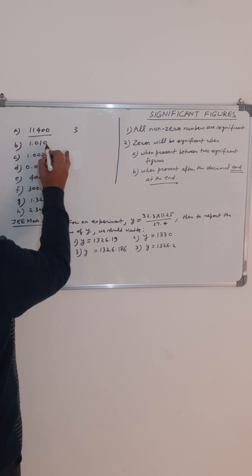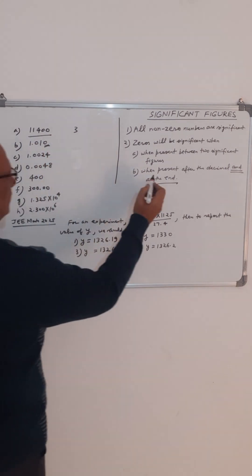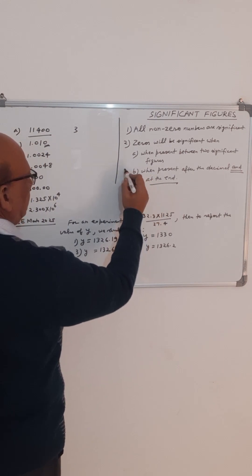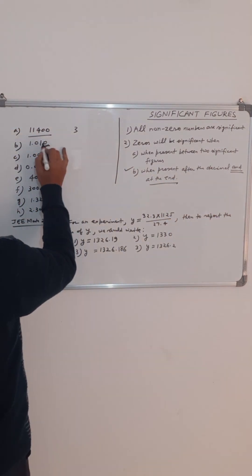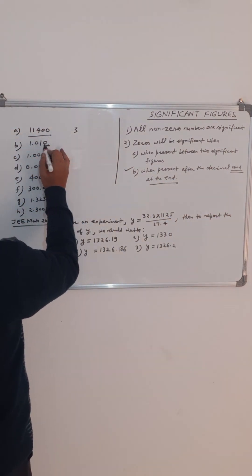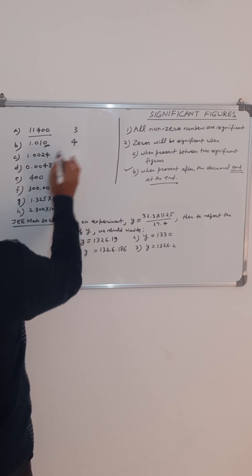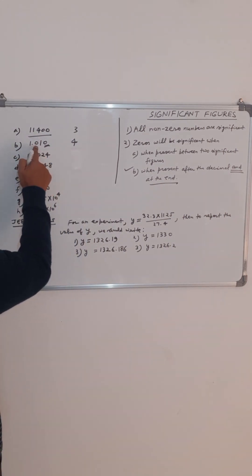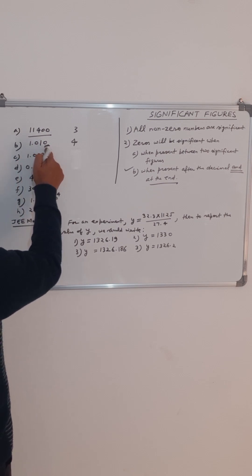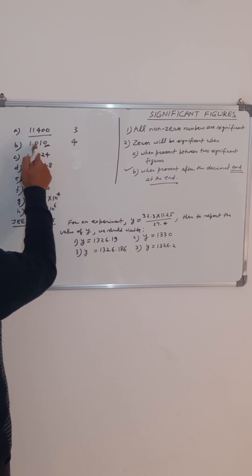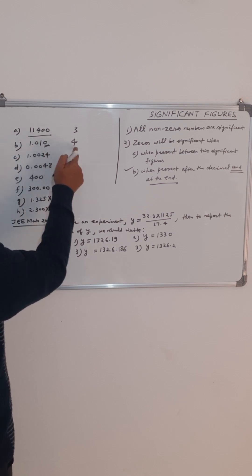Now, 1.010. This zero is after the decimal and at the end, so it is satisfying condition number two — when present after the decimal and at the end. So all four figures will be significant; it will have four significant figures. This zero is significant because it is present between two significant figures, and this zero is significant because it is present after the decimal and at the end.